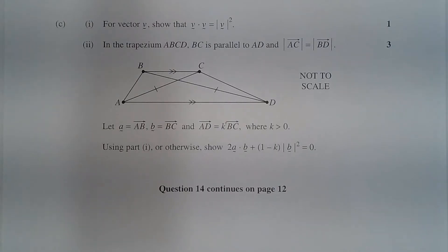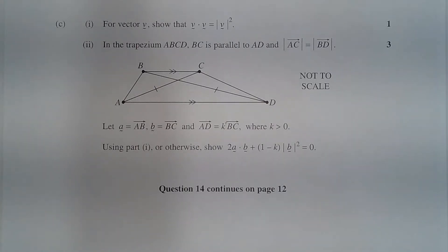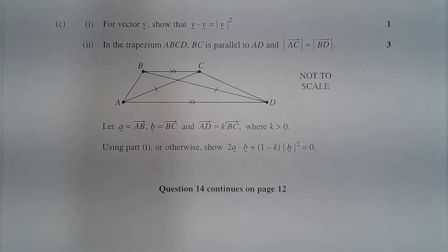Question 14C, part 1. For vector v, show that the dot product of vector v and vector v is equal to the square of the magnitude of vector v.